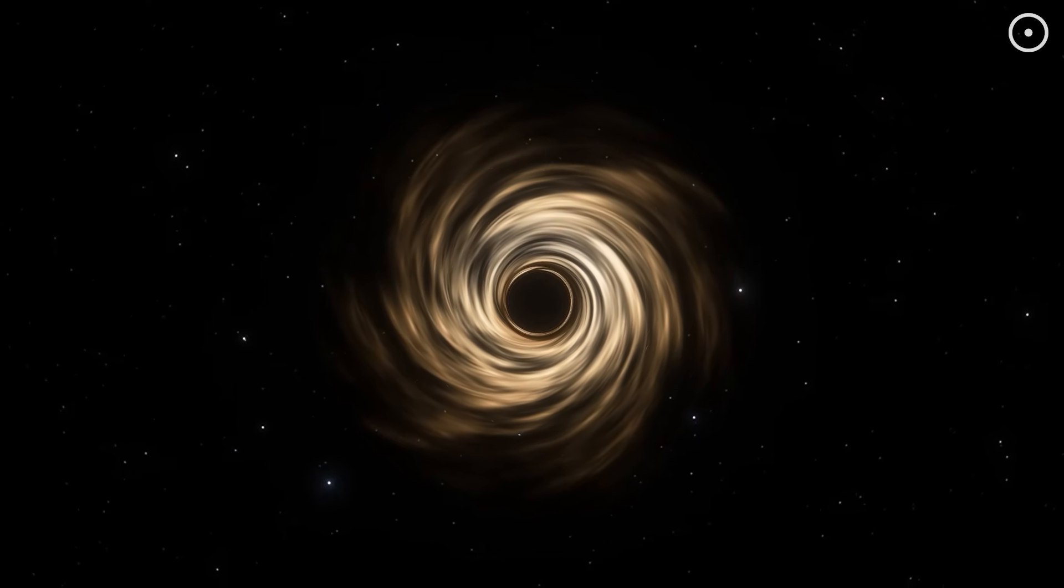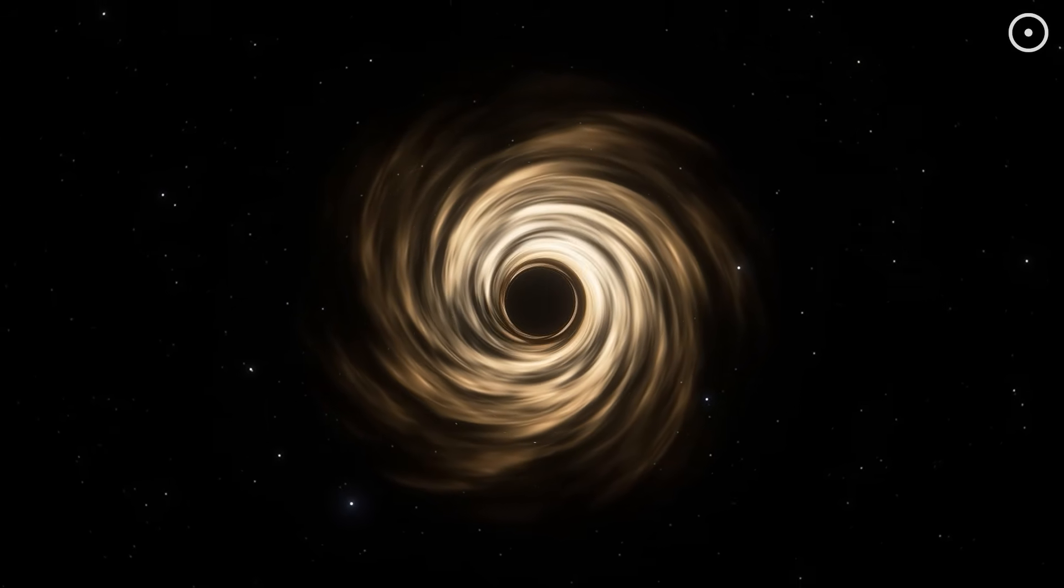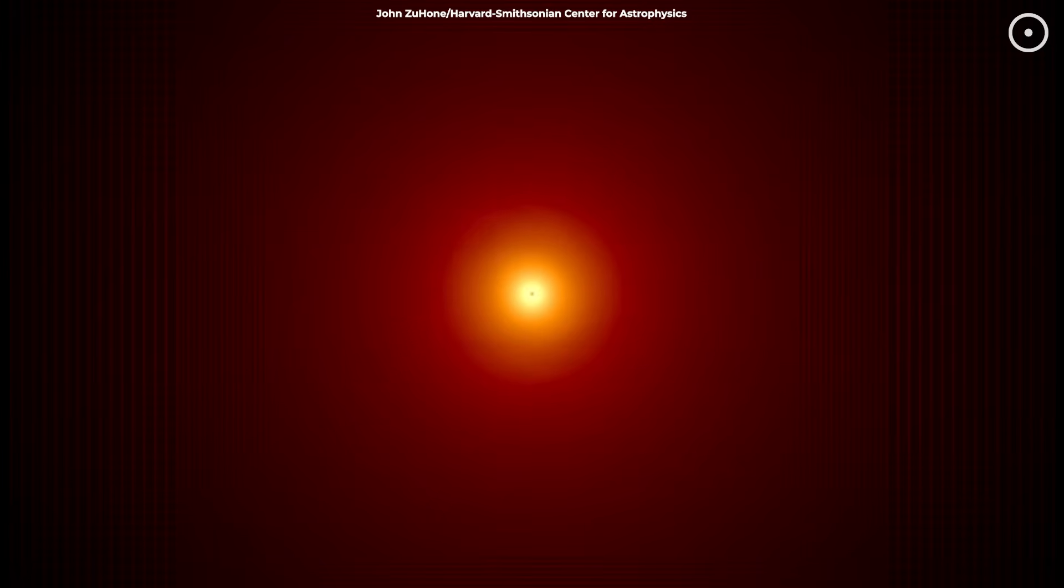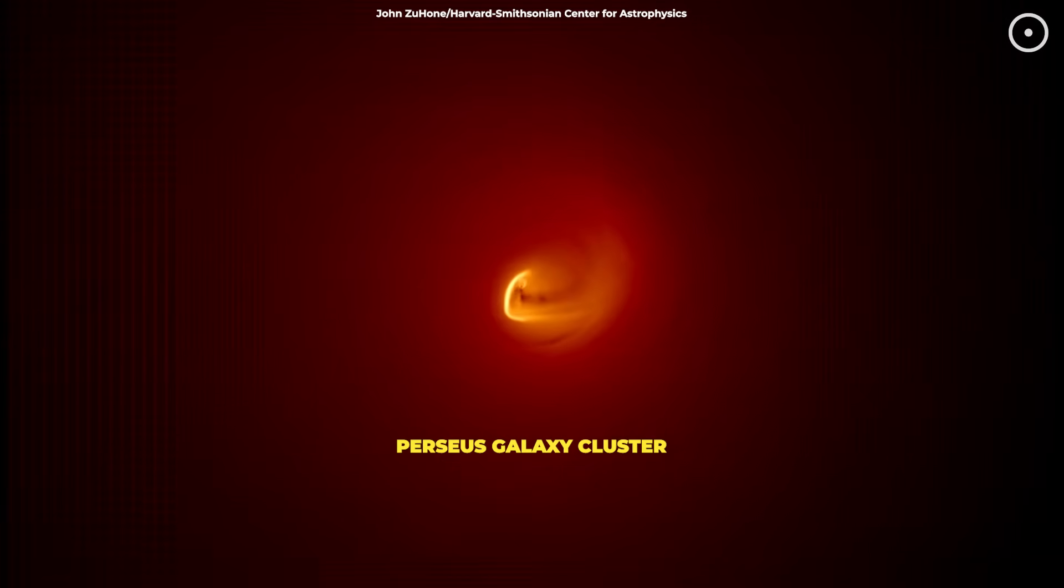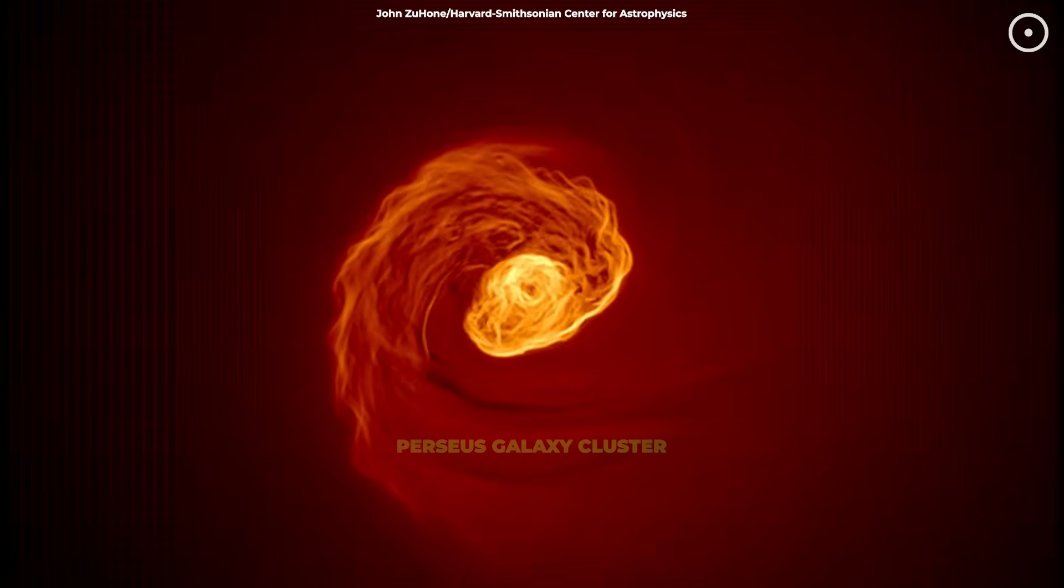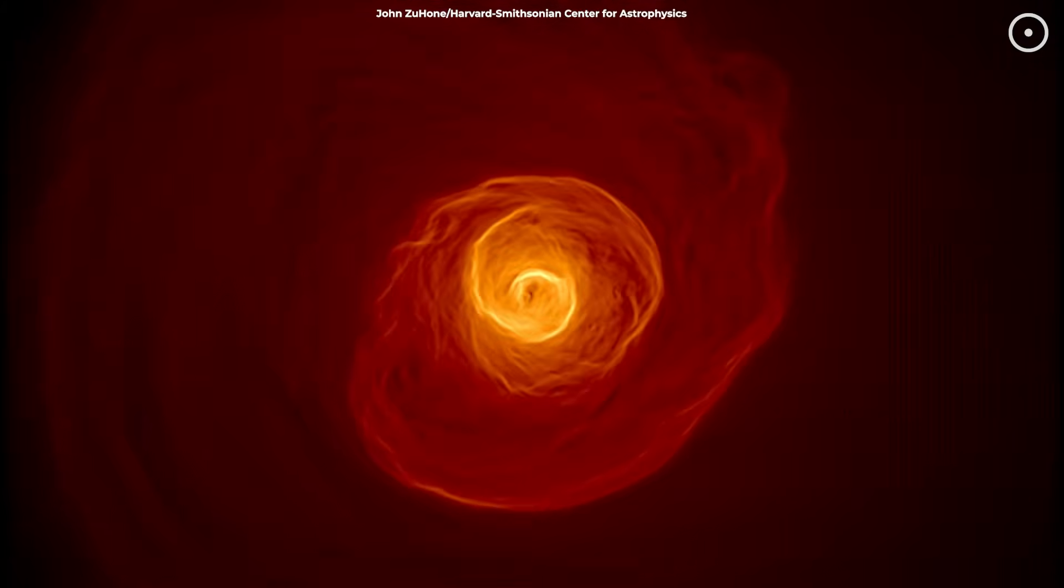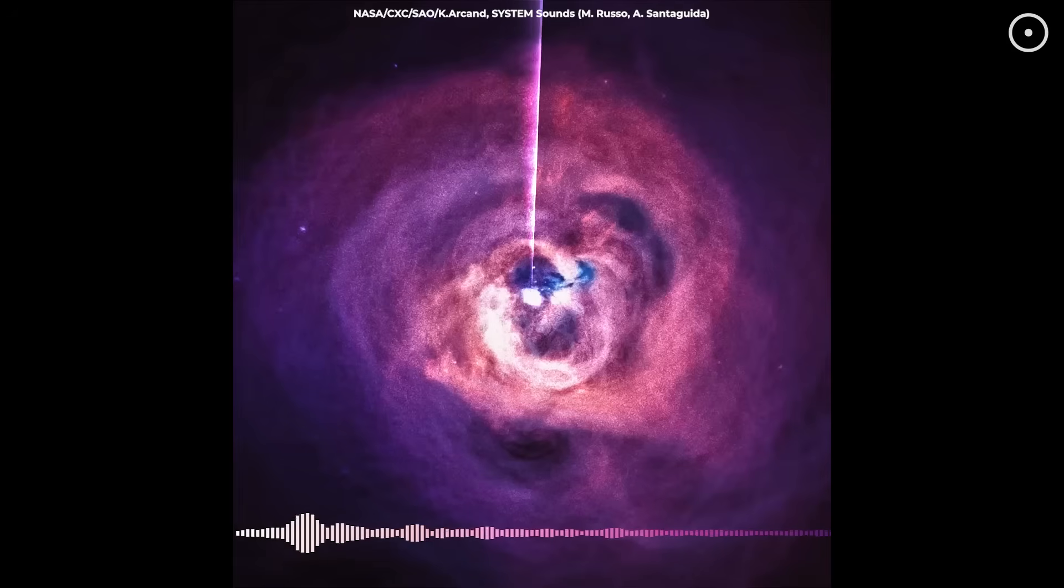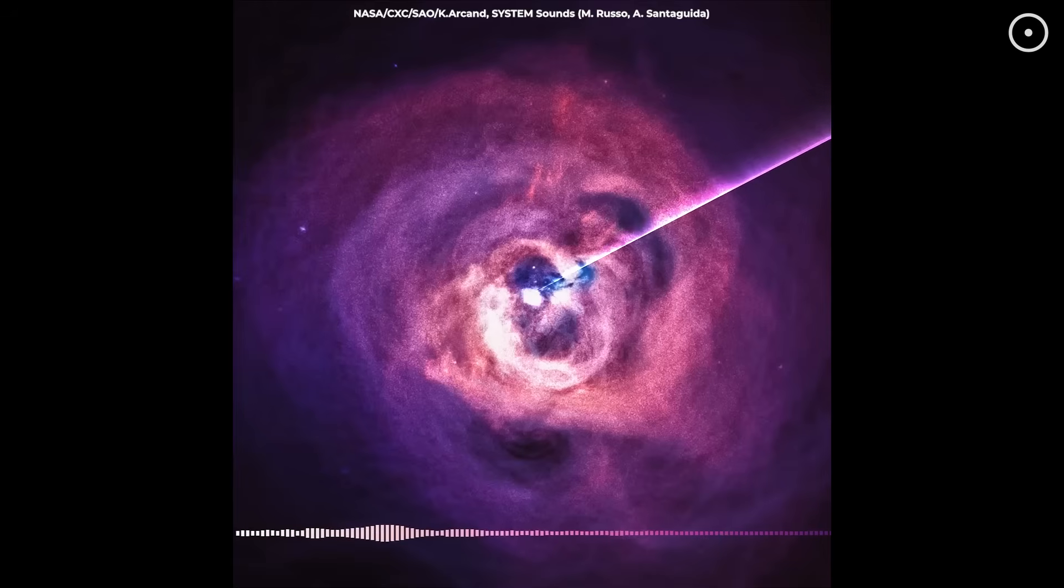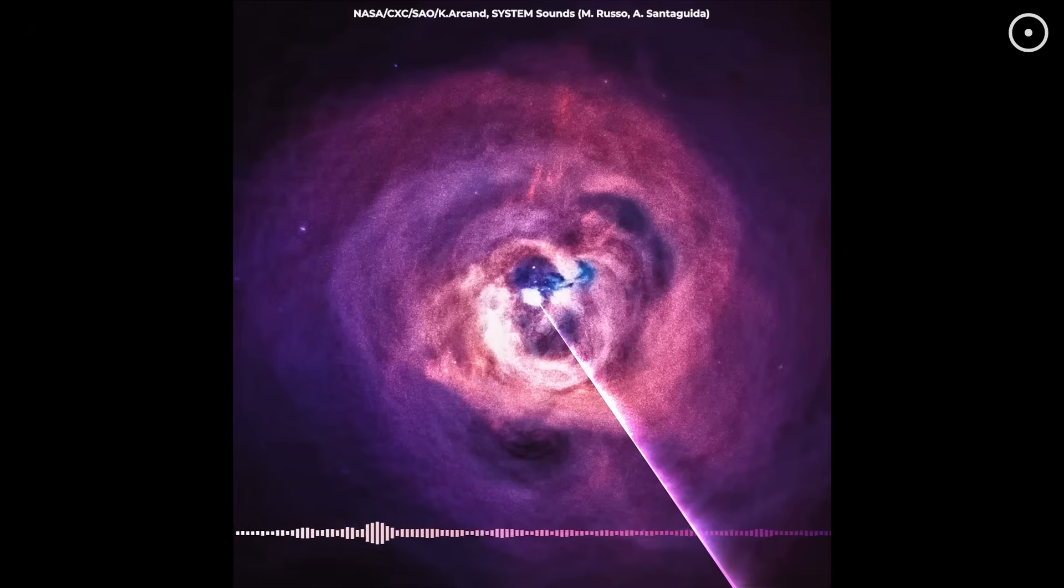Okay, they're not belting out pop songs, but they can create sound waves in space. One of the best examples comes from the Perseus galaxy cluster, where astronomers discovered that a supermassive black hole was producing pressure waves in the surrounding hot gas. These waves ripple through the cluster and can actually be translated into sound. Here's the crazy part. The note produced by this black hole is the deepest ever detected, 57 octaves below middle C. It's so low that no human ear could ever hear it, but it's a real vibration in the fabric of space.